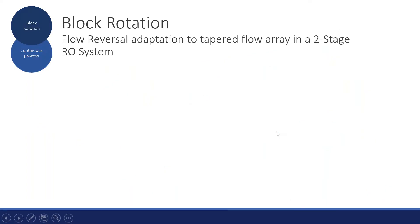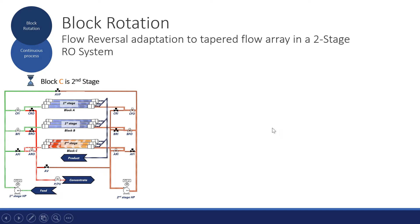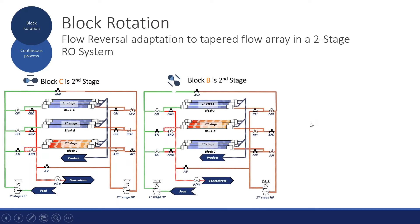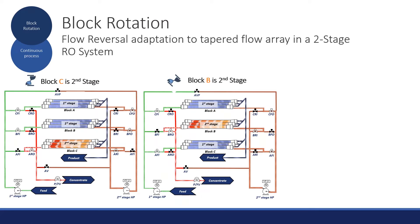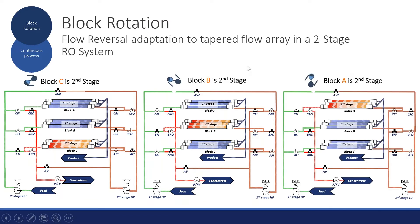For block rotation: consider a two-stage system — stage one in blue, stage two in red — divided into three blocks: A, B, and C. Prior to the induction time, we rotate between block C and block B. Now stage two is block B and stage one is block C, and at the same time we also reverse the flow. Prior to the induction time again, we rotate between the blocks once more — now block A is stage two, and so on continuously.